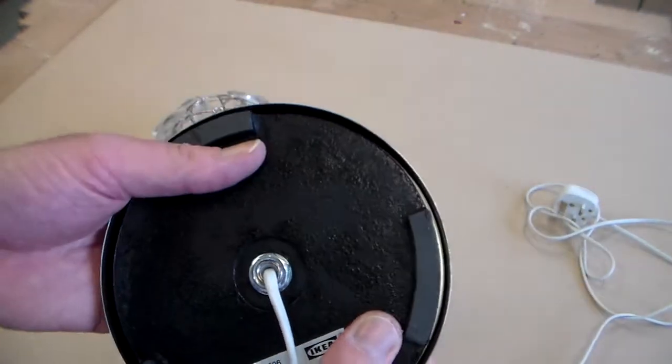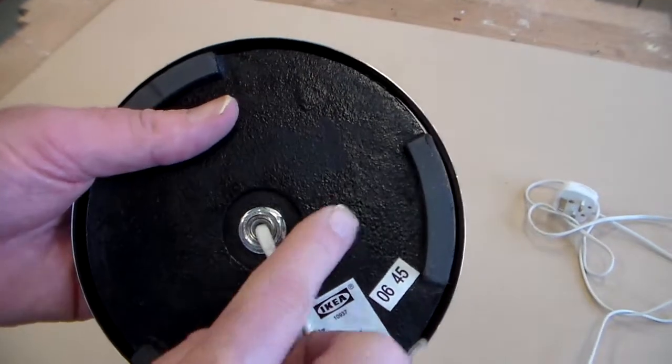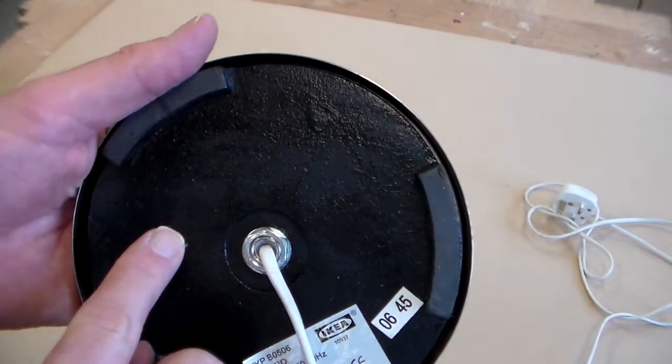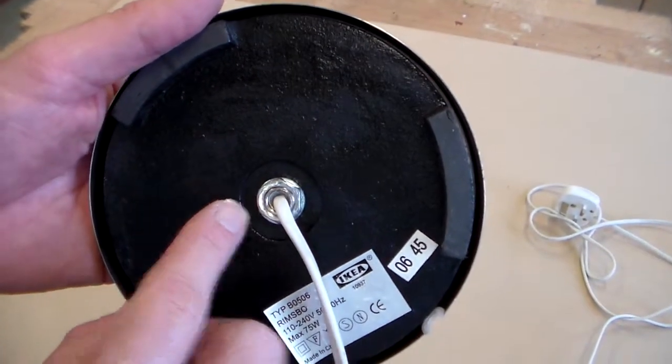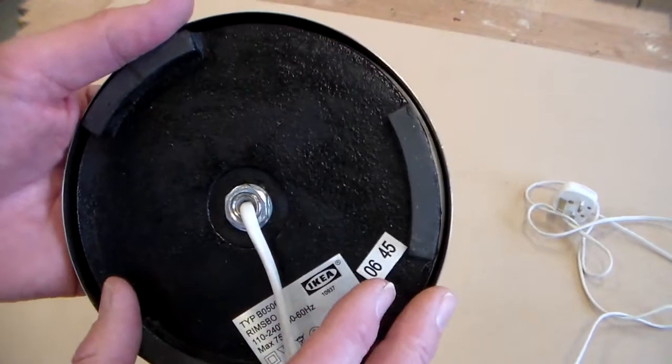If we turn the base upside down we can see there's a heavy cast iron weight in the base to give the lamp stability.